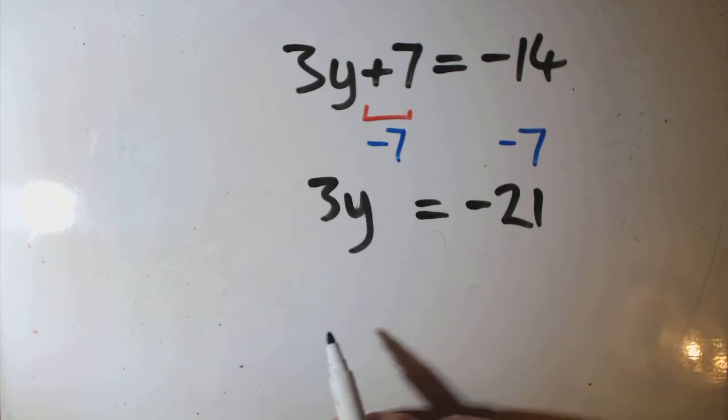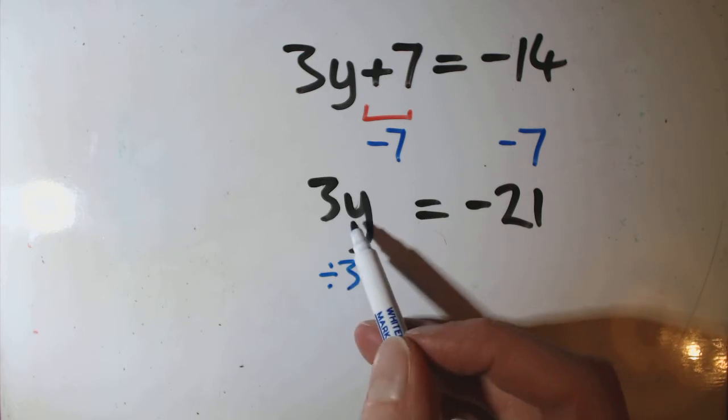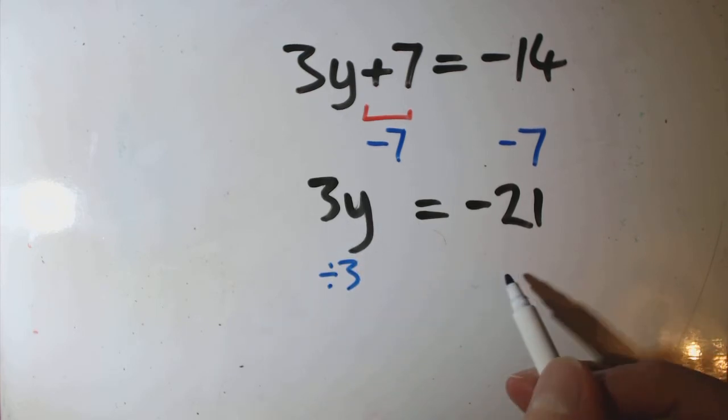We want it, it's 3y, we want it just to be y. So if we divide that side by 3, so it's basically what y's been times by, then divide this side by 3.